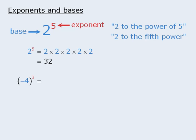Similarly, the exponent 3 in this expression tells us to take the base of negative 4 and multiply it by itself 3 times. So negative 4 to the power of 3 is equal to negative 64.